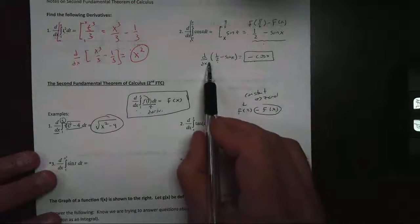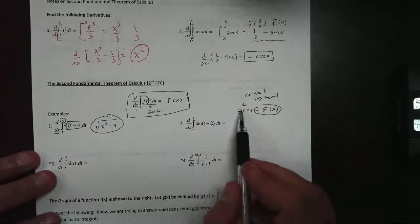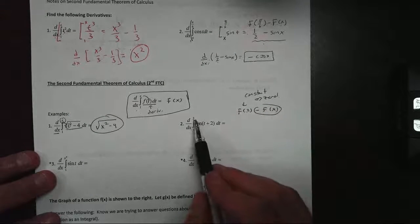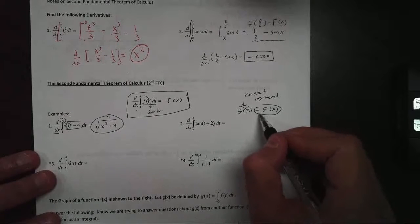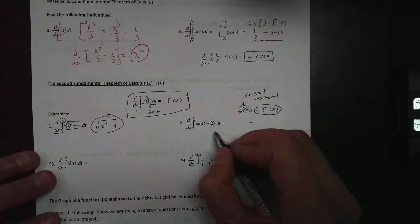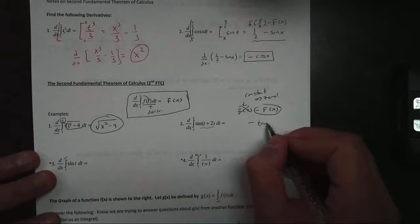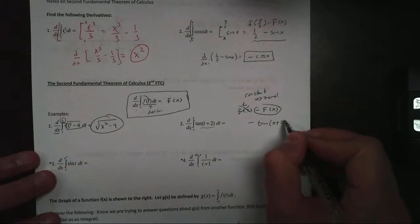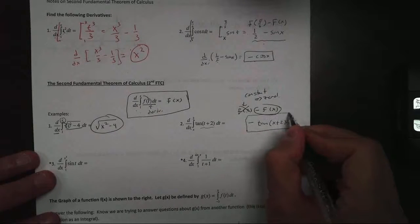Remember what happens to a constant when you take a derivative — it becomes 0. Just like we saw earlier, the 1/2 became 0. So constants don't really matter; I don't worry about that one. It's this negative sign I worry about, so I get negative f of x. And this becomes the tangent of x plus 2. There's my answer right there.